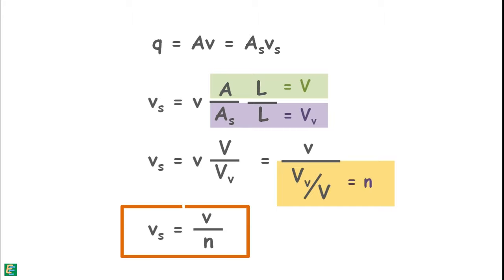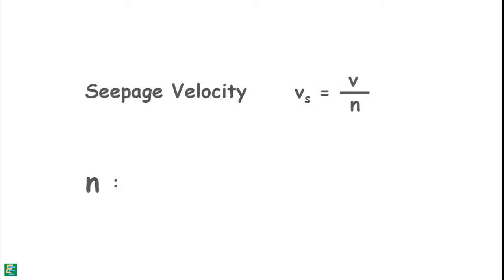This velocity of liquid through voids is called seepage velocity. We know that porosity cannot be greater than 1. So if this quantity is smaller than 1, then this seepage velocity will always be greater than discharge velocity.